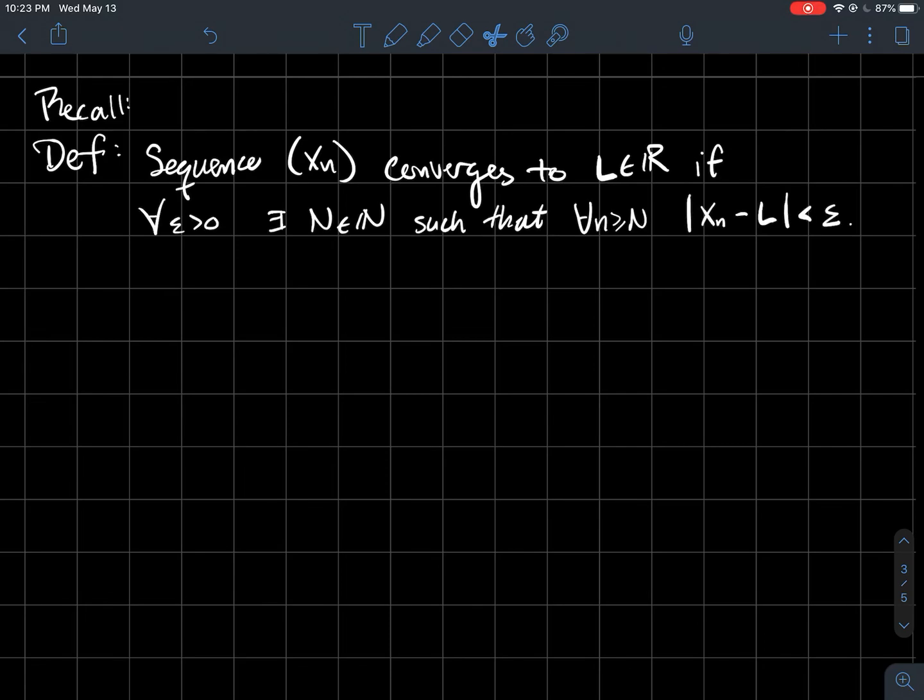What I want to remind you of from the previous video is the definition in symbols for what it means for a sequence x_n to converge to L. In symbols, that means for all positive numbers epsilon, there exists a natural number N (which depends on epsilon) such that for all n greater than or equal to N, every single term of high enough index...